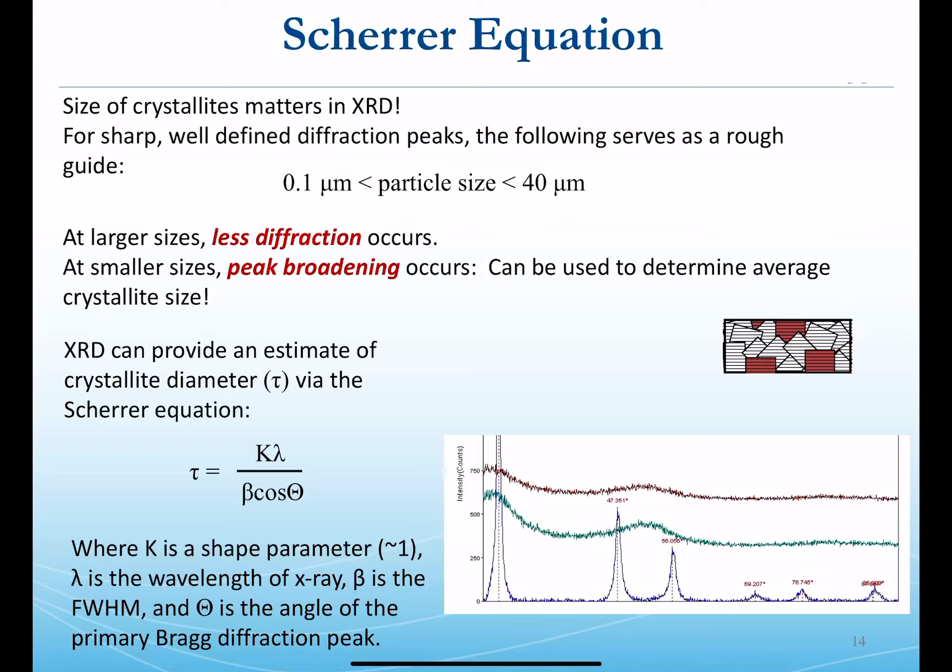The Scherrer equation helps describe how particle size or crystallite size is related to peak intensity and peak shape. For sharp, well-defined diffraction peaks, we can apply the Scherrer relation. If particle size lies between 0.1 micrometers and 40 micrometers, we can apply the Scherrer equation. When crystal sizes are large, less diffraction occurs.